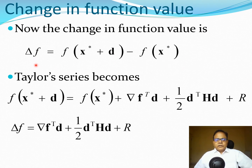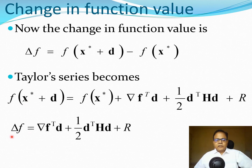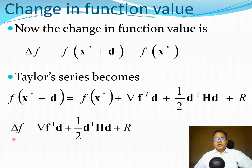Now let us look at the change in function value. Delta f = f(x* + d) - f(x*). Using the Taylor series, we can write this compactly as a simple expression. This change-of-function notation is used in many optimization situations to guide the method in a particular direction, and we will come back to it repeatedly in both one-dimensional and multi-dimensional settings.